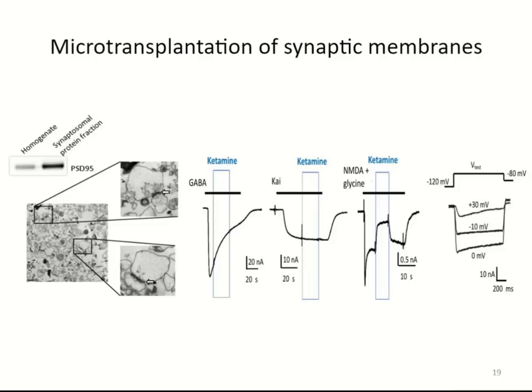Kainate responses are mostly from AMPA receptors — when we use potentiators of kainate receptors, we don't see increases in responses, so the kainate contribution is minimal. We also have NMDA responses when we apply NMDA plus glycine. GABA receptors are the most abundant, followed by AMPA responses, and the smallest are NMDA receptors. We also have calcium channels that can be observed by voltage protocols.